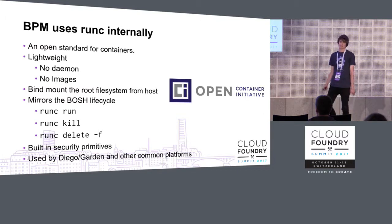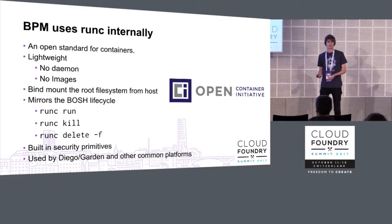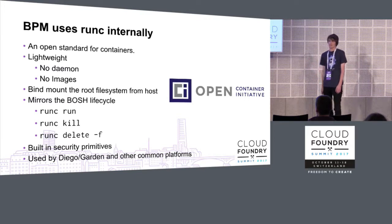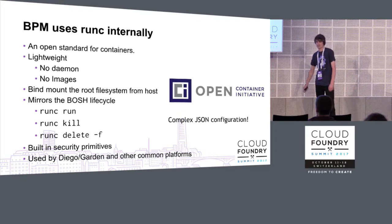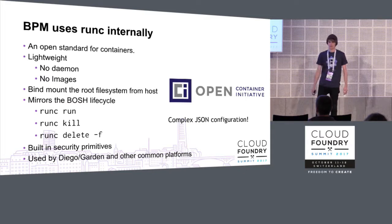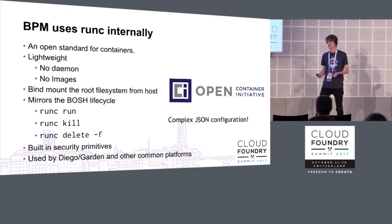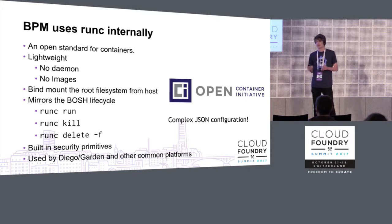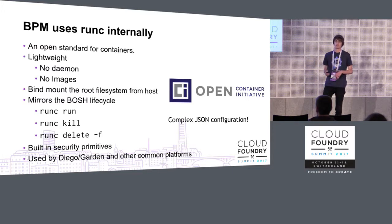You might ask why we don't just expose RunC directly to BOSH jobs rather than building another tool around it. The real reason is that the JSON configuration for RunC is kind of crazy — I've seen specs that take up over a thousand lines, and they have way too many specifics that most people don't really care about when creating releases. One of the big takeaways from BPM is that we really want to give a simple interface to secure containers, and that's our goal.